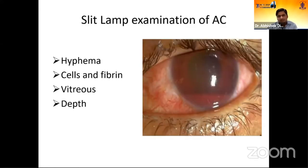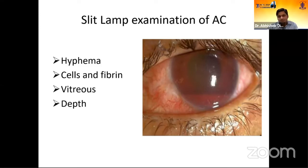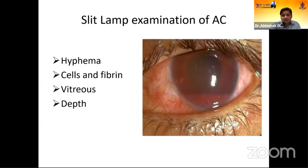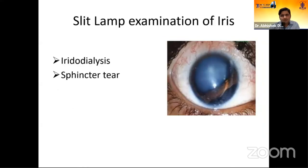In anterior chamber examination, if there is hyphema, treat it conservatively or surgically depending on the amount. If there is cells or fibrin in the anterior chamber, start prednisolone drops and cycloplegic drugs to quiet the chamber before proceeding with surgery. Check for presence or absence of vitreous in the AC, as it gives a clue about zonular integrity and possible posterior capsular tear. Also note anterior chamber depth — it may be deep in posterior lens dislocation or shallow when the lens is subluxated.